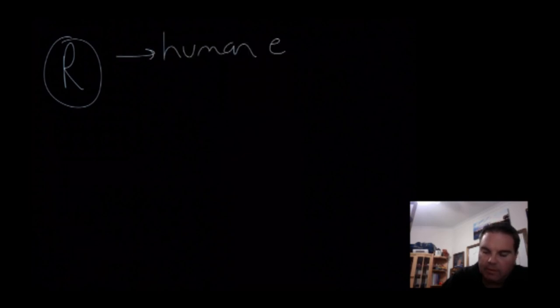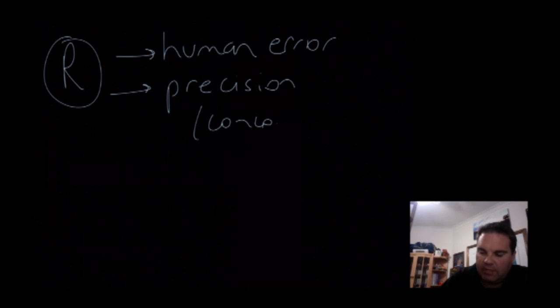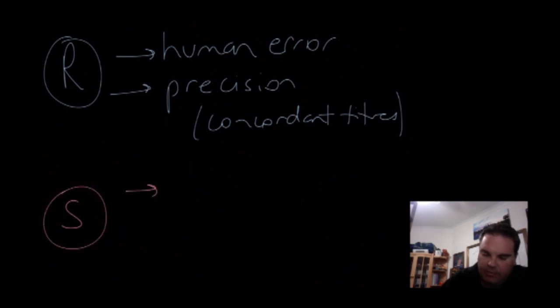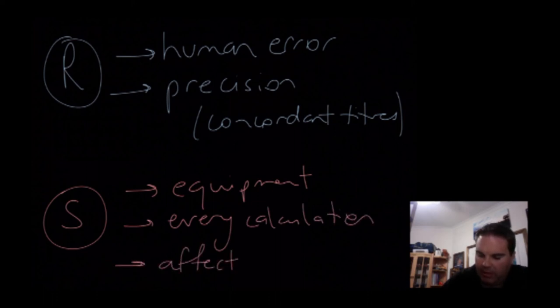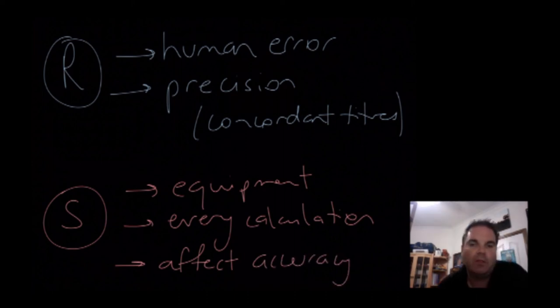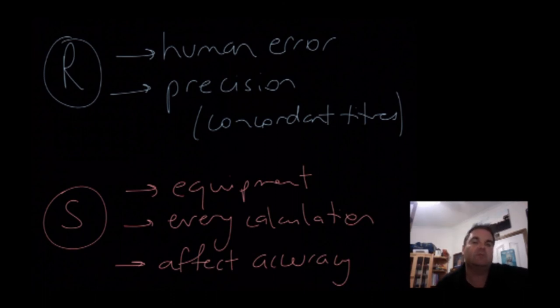To summarise: random errors are generally due to human error, and they affect your precision - your ability to get concordant titers. Systematic errors are generally due to equipment, they affect every calculation, and they affect your accuracy, which is your ability to get close to the actual true value. Hopefully this has been helpful. I haven't covered absolutely everything that could go wrong, just some of the common ones. I hope this helps with your prac write-ups and understanding some of the issues you can have. Thanks, guys.